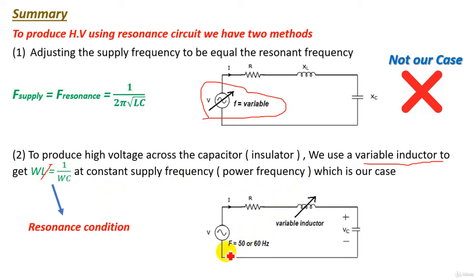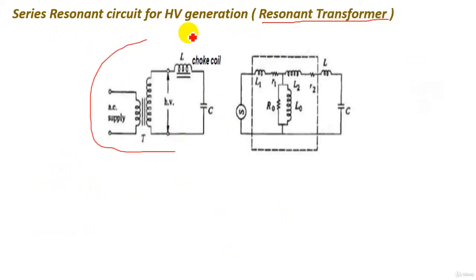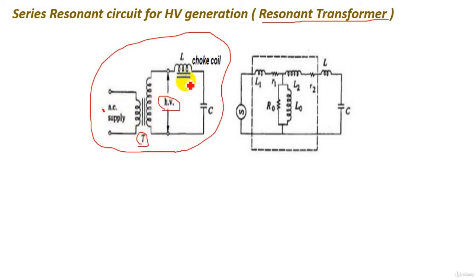This is the equivalent circuit. We have a constant supply frequency of 50 or 60 Hz and a variable inductor. This value of inductor is designed and adjusted to get ωL equal 1/ωC. The series resonant circuit for high-voltage generation is also called a resonant transformer. We have an AC supply of 220 volts, a high-voltage transformer, a shock coil which is a variable inductor to adjust its value to make resonance, and a capacitor C representing the insulator in the high-voltage lab.